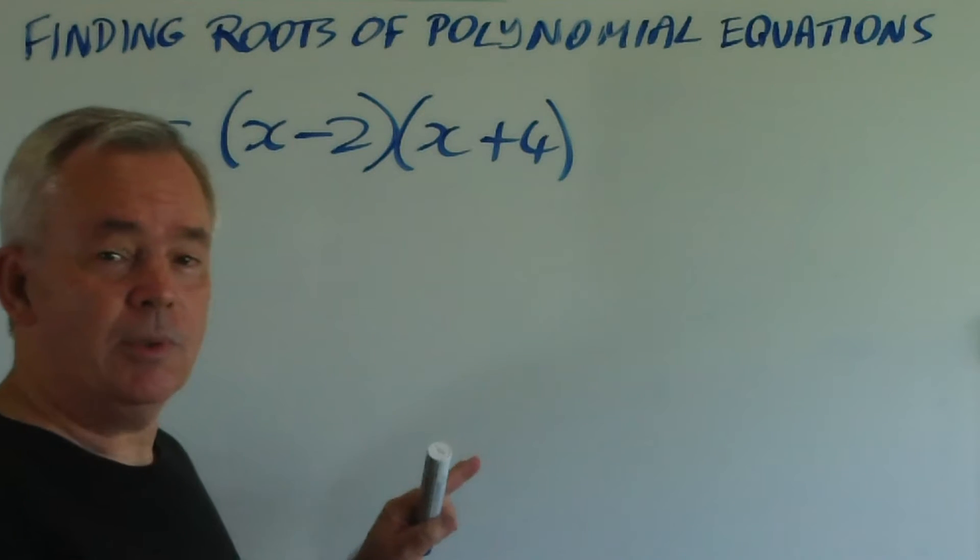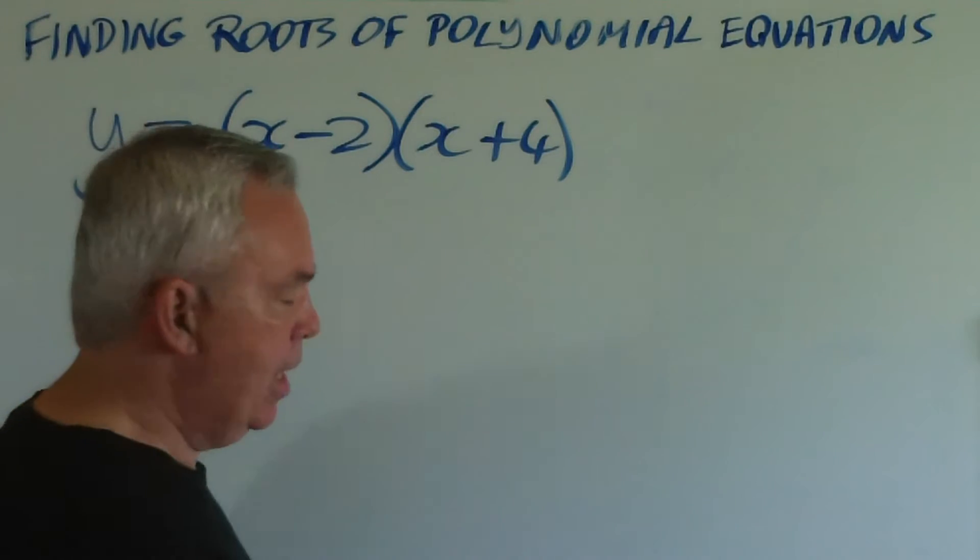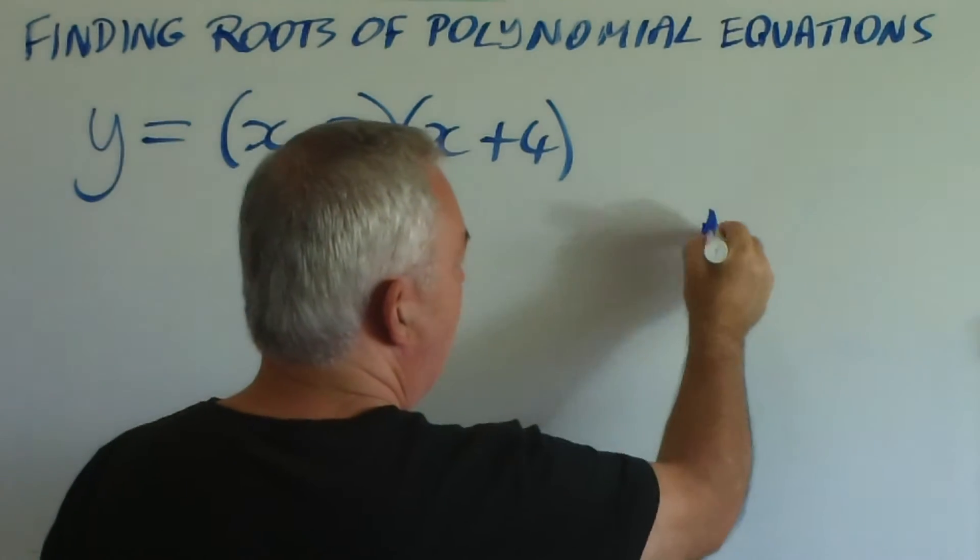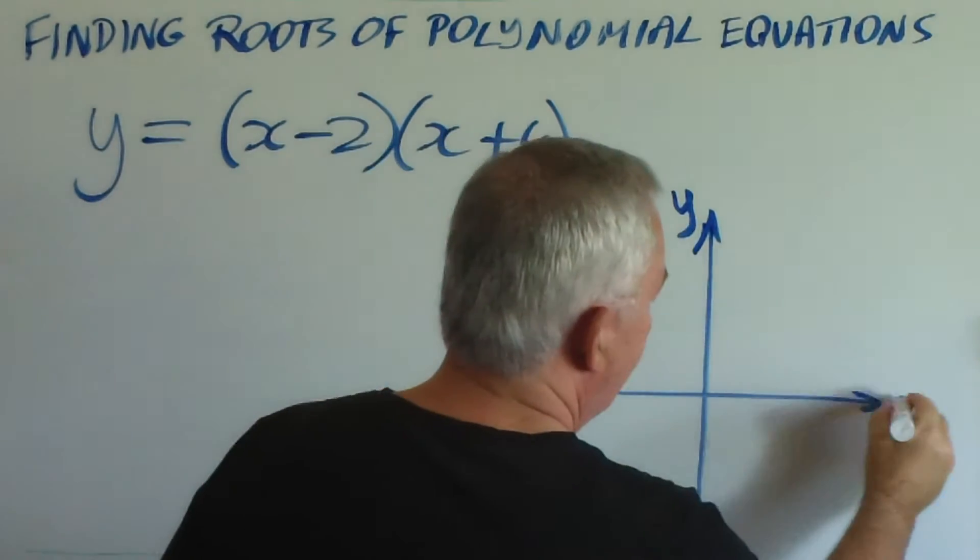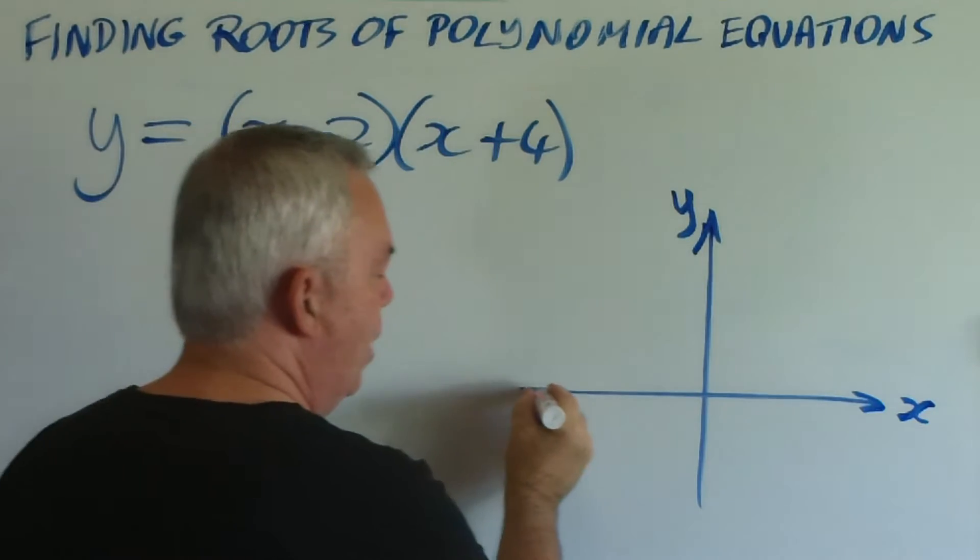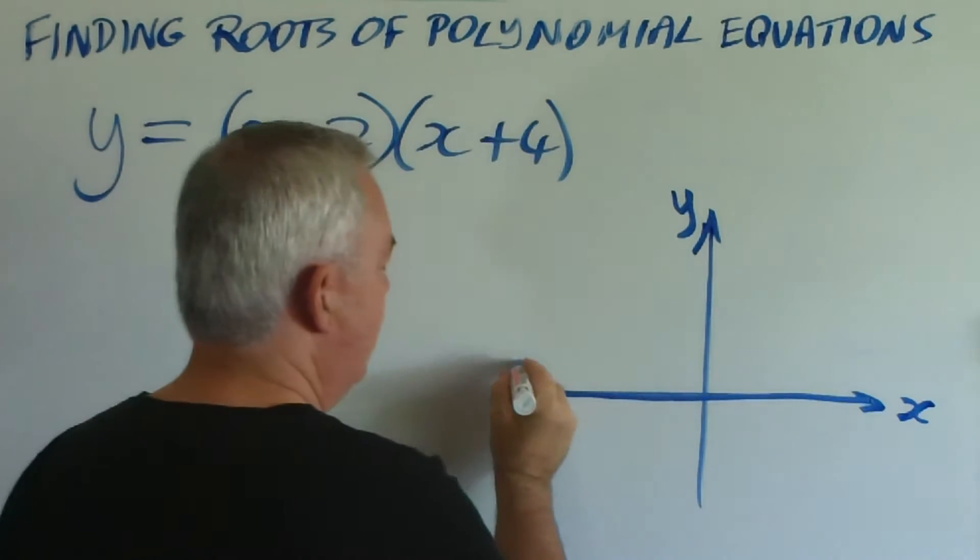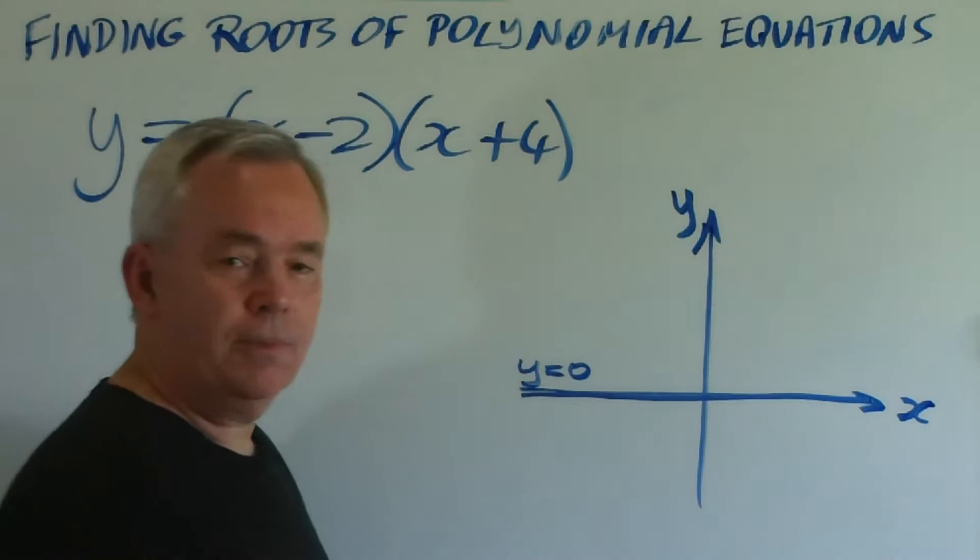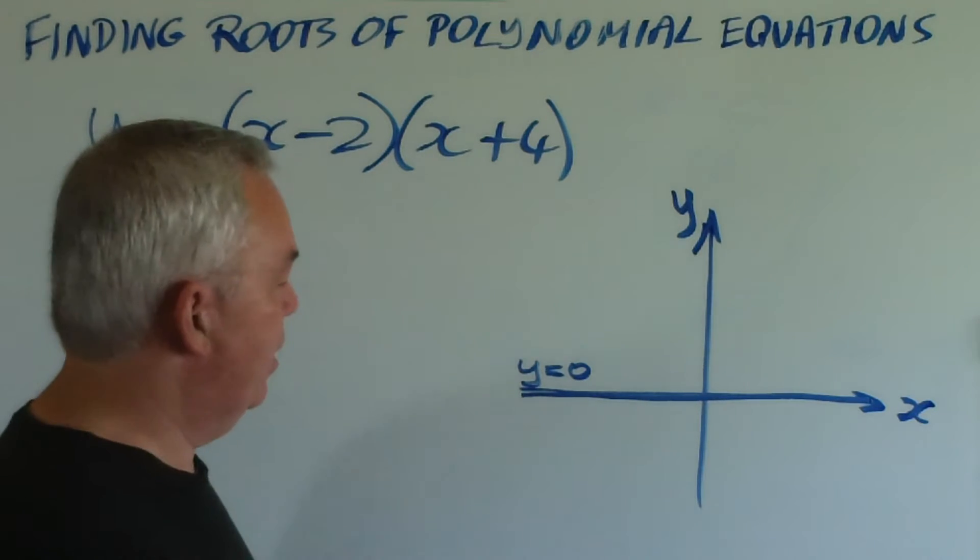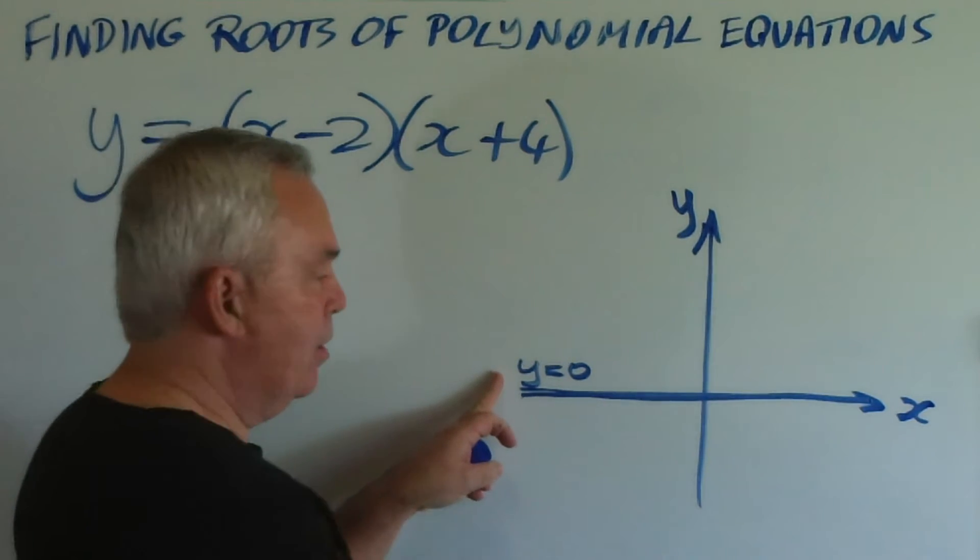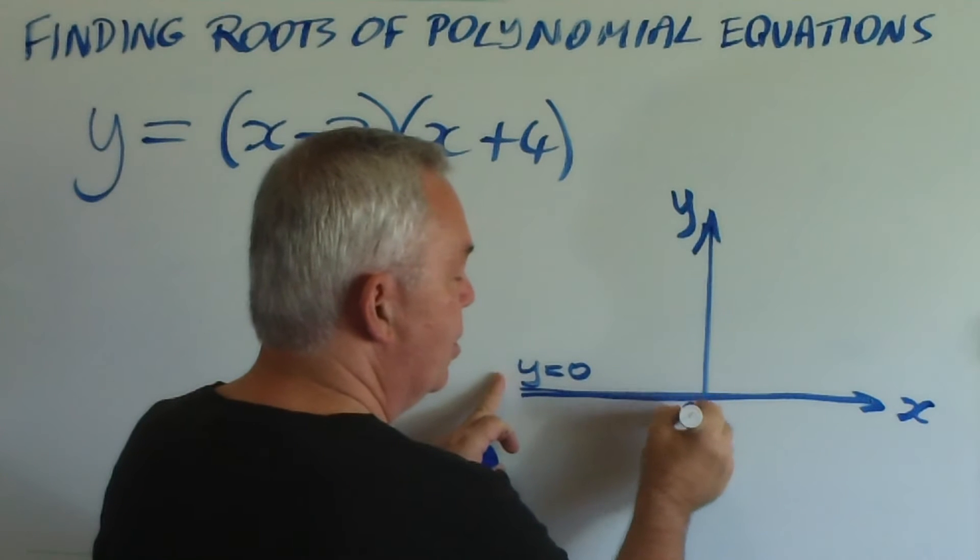In order to understand the principle upon which this skill is based, we have to understand that on a graph, the equation for the x-axis is y equals zero. Not x equals zero. It's the y value that remains zero. The x value, of course, changes.